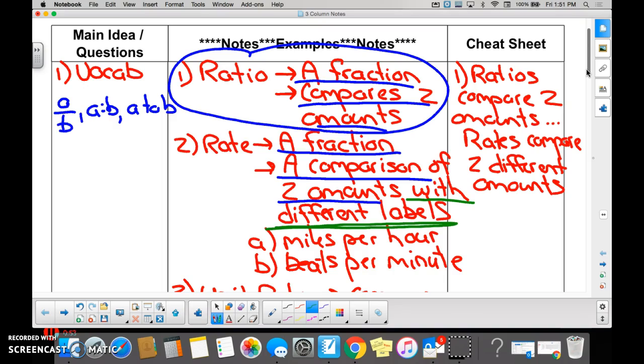An example that would be? Five per hour. Or if you're checking your heart rate, you would say beats per minute. Miles and hours are different labels. Beats and minutes are different labels. Yes, no? Yes.